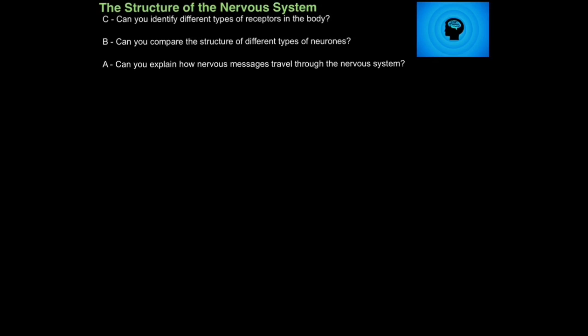In this tutorial, we're going to learn about the structure of the nervous system. The first aim is: can you identify the different types of receptors in the body? Then, can you compare the structure of the different types of nerve cells or neurons in the body? And finally, can you explain how nervous messages travel through the nervous system, very briefly?